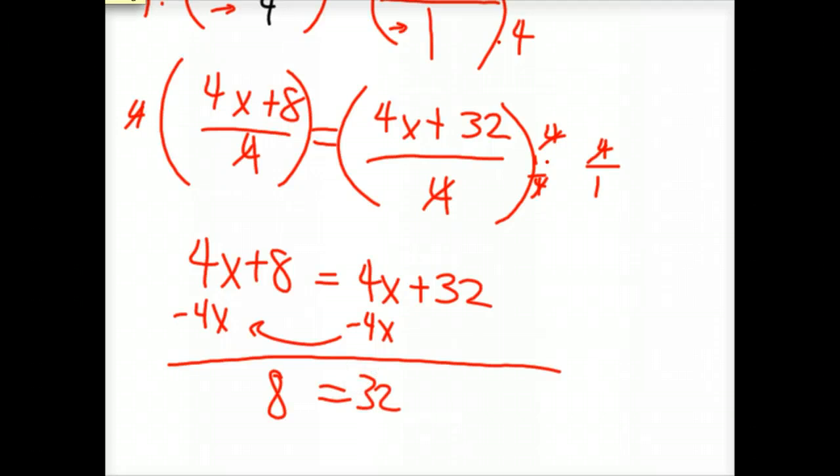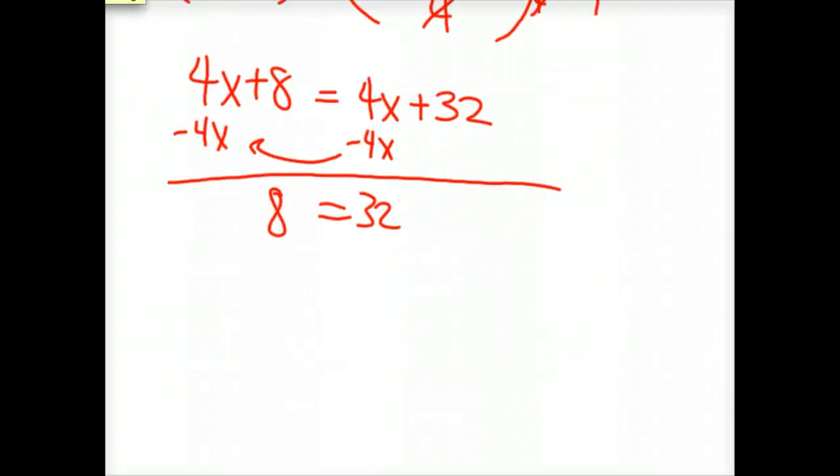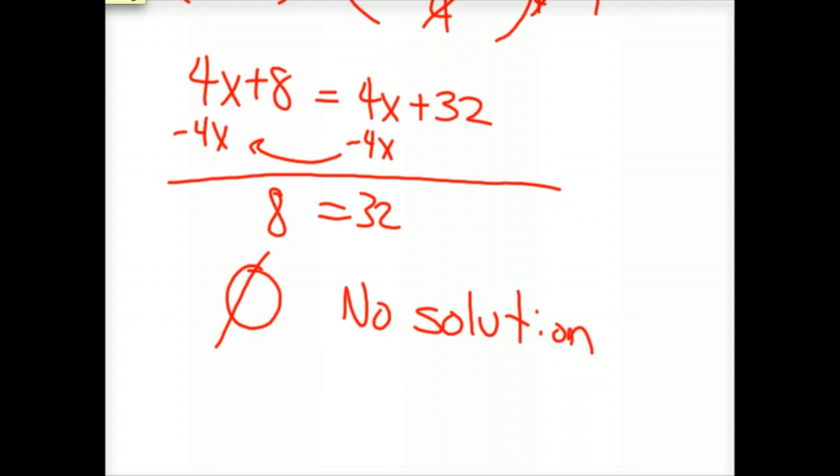All right, well 8 cannot equal 32. So there's a couple ways to write this. This is a contradiction equation because we've ended up with a contradiction. 8 cannot be 32, so we know that there is no solution to this problem. And your original is a contradiction equation.